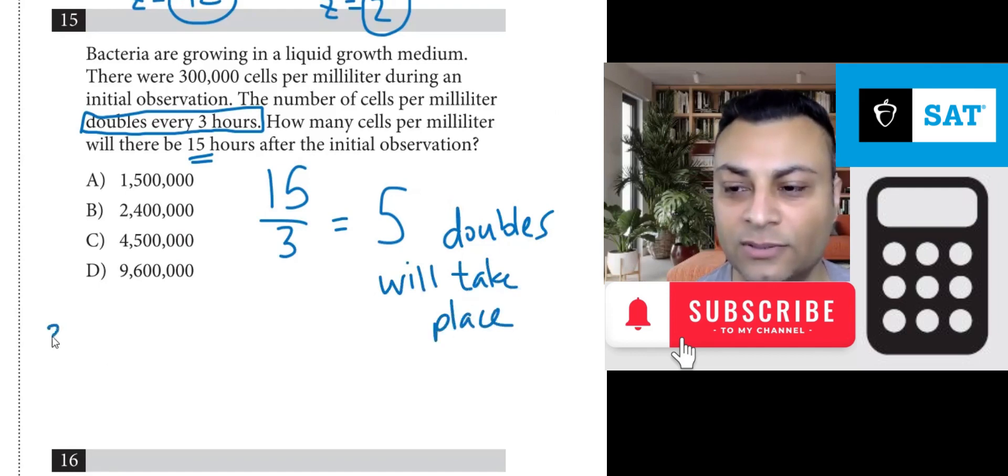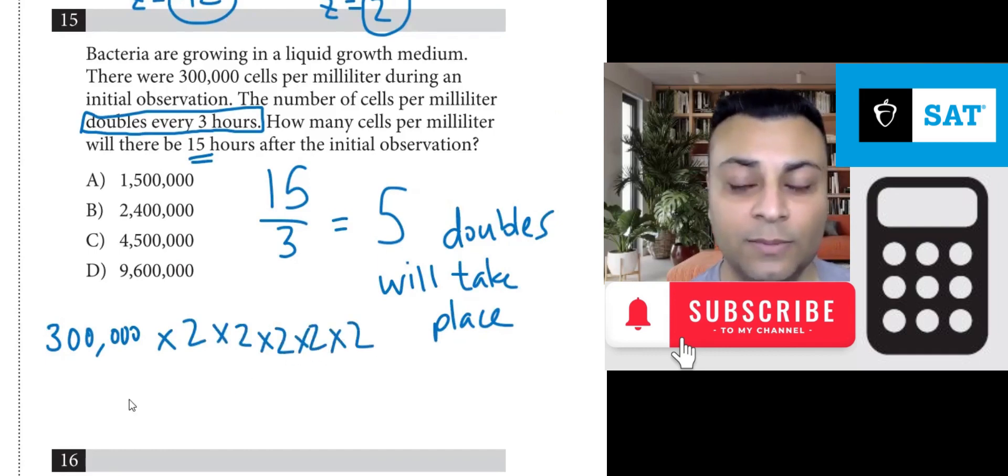So we have to do 300,000 times 2, but 5 times. That's once, a second time, a third time, a fourth time, a fifth time. A much more convenient way to write this is 300,000 times 2 to the 5th.